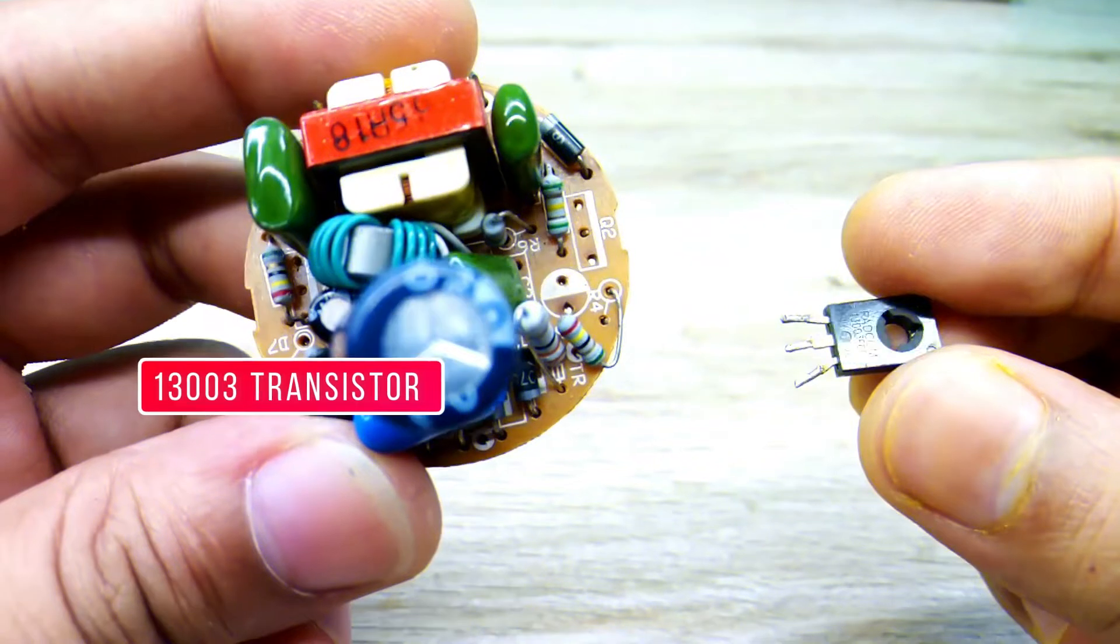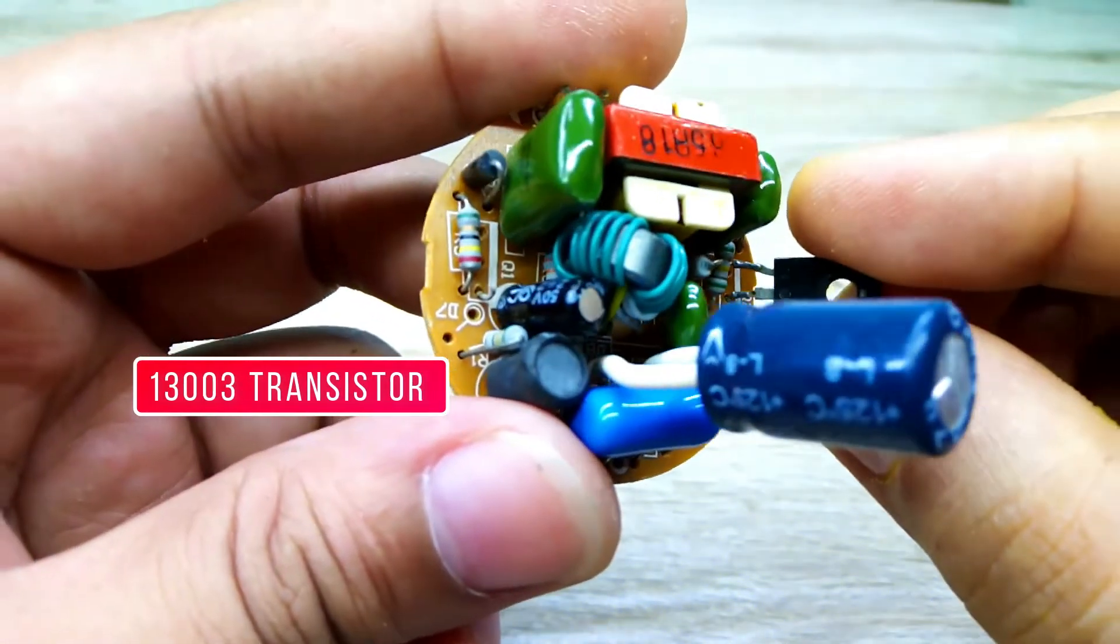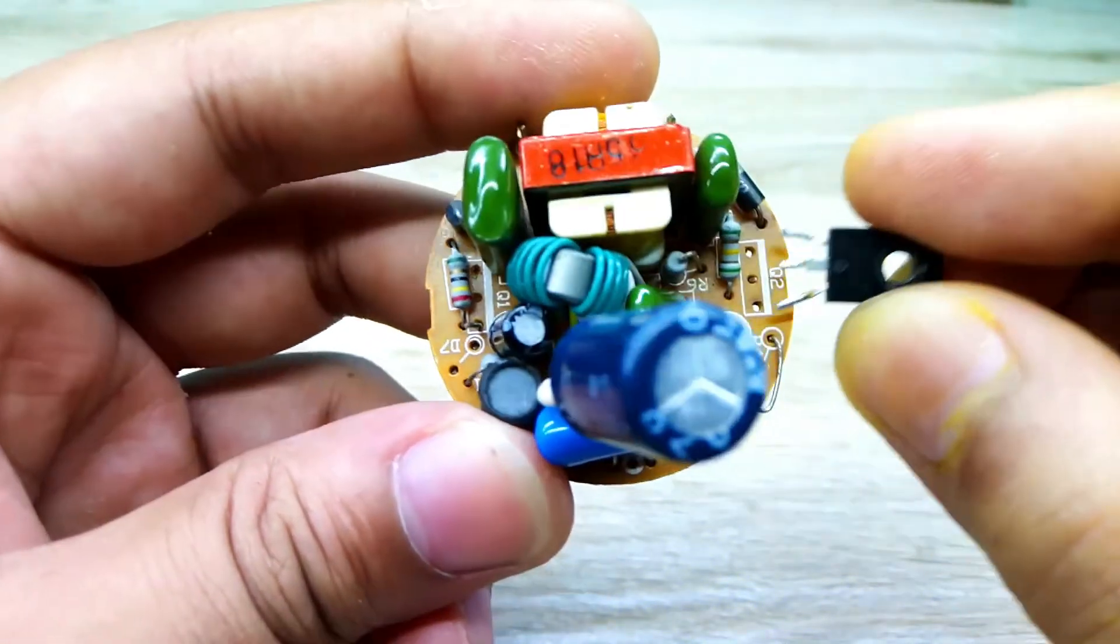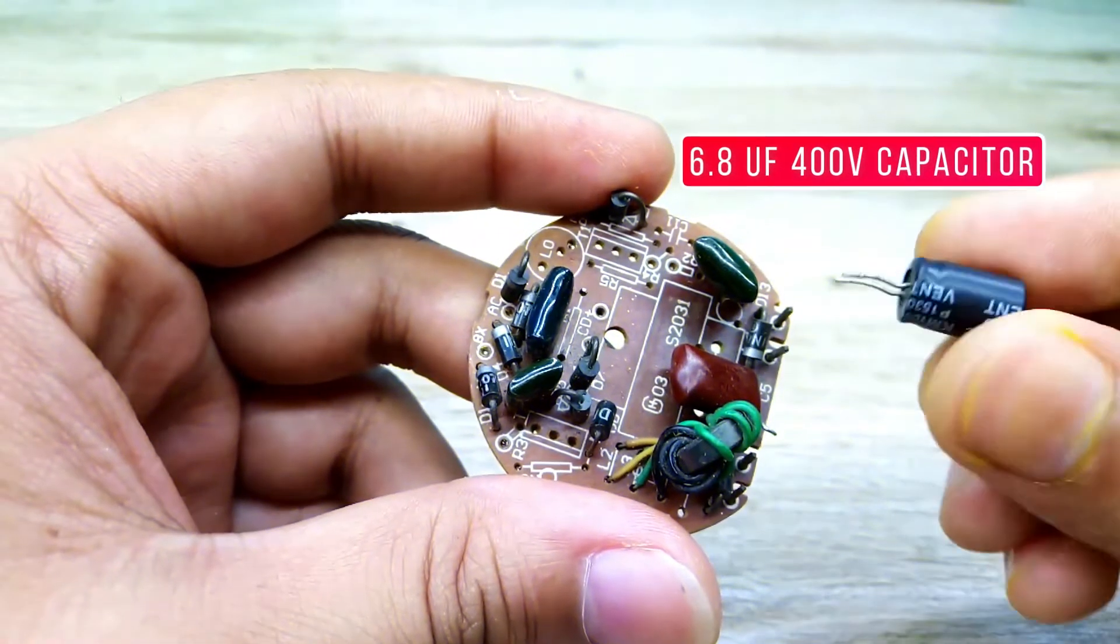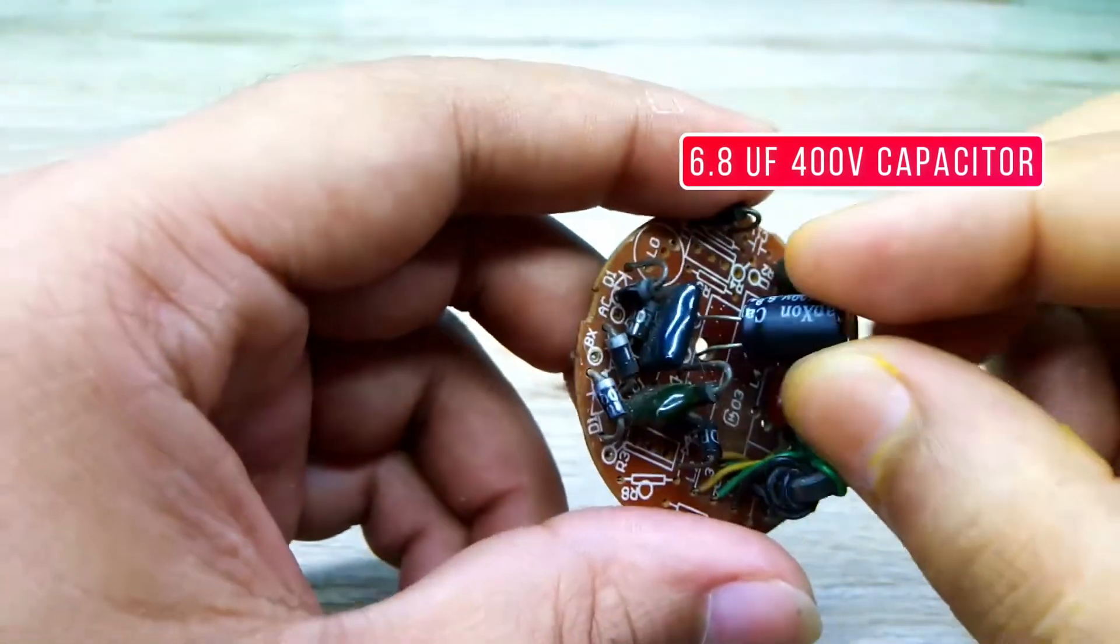This is a capacitor. I also got it from the old chapel light circuit. You can buy it from the store or online if you want.